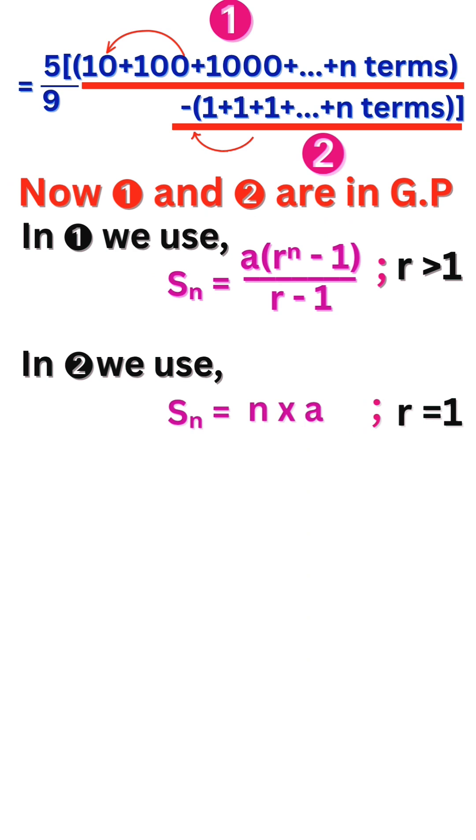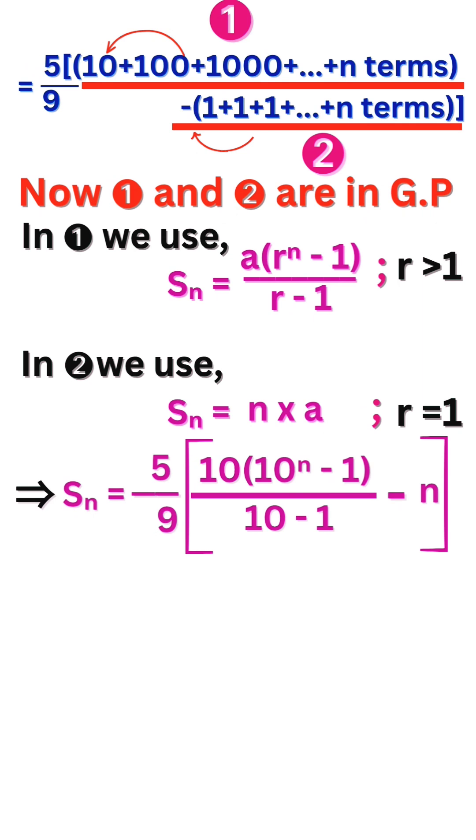In second equation we use S_n equals n times a, because the common ratio r is 1. Apply both formulas in equation 1 and 2.